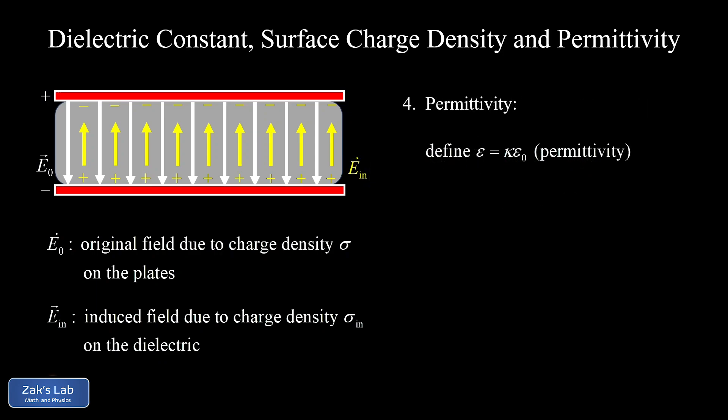The final thing we introduce here is the idea of permittivity. Remember, epsilon_0 has been called the permittivity of free space. Now we define permittivity in general as the dielectric constant multiplied by the permittivity of free space. The dielectric constant for empty space is just one, giving us the permittivity of free space; but when there's an insulating material present, we substitute in kappa to get a new value of permittivity. This simplifies many expressions we deal with when working in the presence of a dielectric.